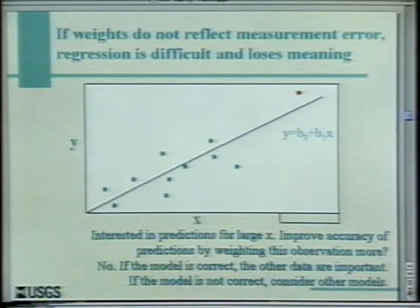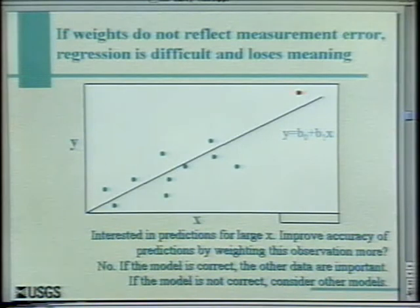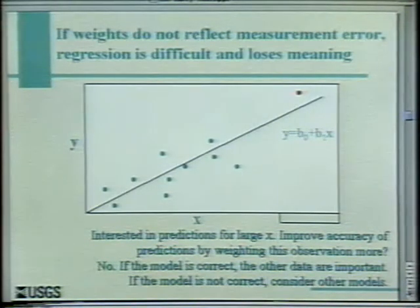Can we improve accuracy by weighting that one observation at the large x value more heavily than the others? The answer is no — both if the model is correct, and if the model isn't correct, you don't increase the weighting, you try to fix the model. In the groundwater example, if you want to put big weights on the flows, you have to convince yourself that the heads aren't telling you anything about the system. I think that's a hard sell, because the heads are basically telling us what channels the flows are occurring in.